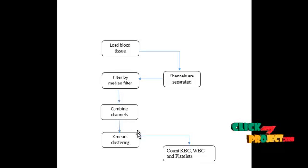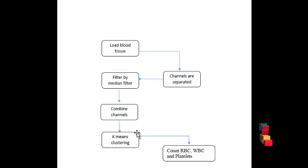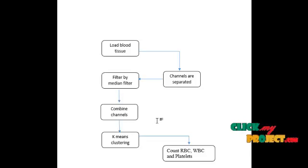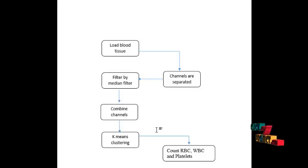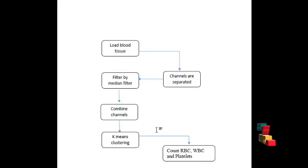The clustering values are differentiated by separate colors, where each color denotes the same type of segmentation. That segmentation is based on the size of the blood cells. The segmented blood cells are connected by boundaries, and the boundaries are labeled by numbers. The labeled numbers are separated, and then we count the labeled count, which is displayed.